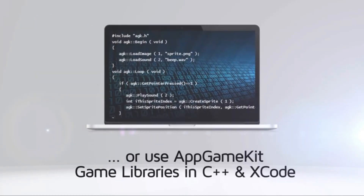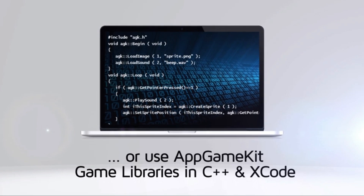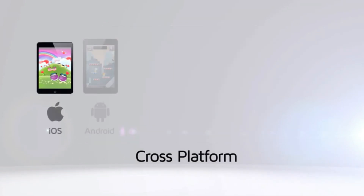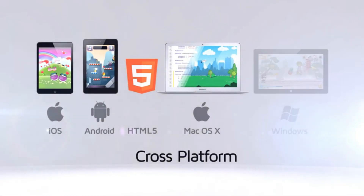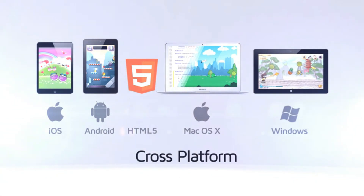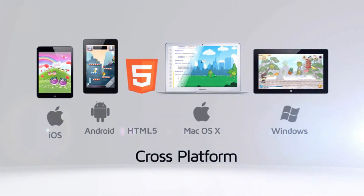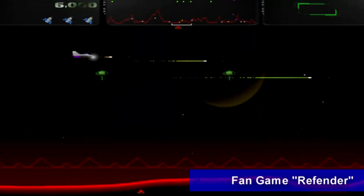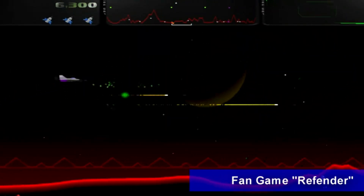You can choose to code in the easy-to-learn AppGameKit Basic, or you can use their libraries in C++ and Xcode. Write your code once and deploy easily to multiple mobile and desktop platforms, and you can even publish your own game on various platforms. Sounds awesome, right?